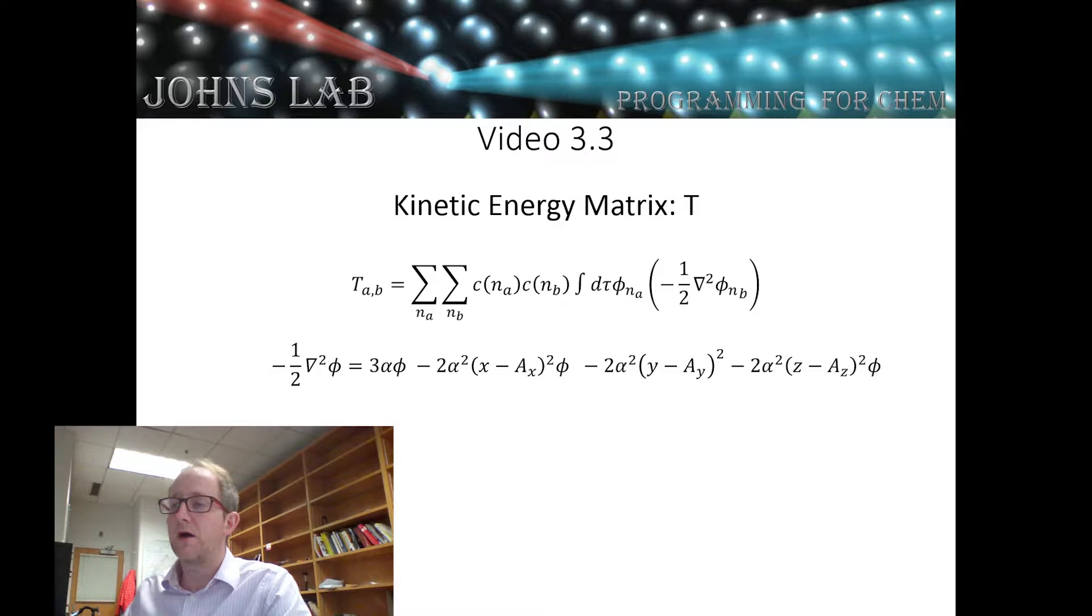We'll get a number times the exponent times the original Gaussian, and then minus polynomials in the x, y, and z direction which will be second order. So x minus ax quantity squared, y minus ay quantity squared, z minus az quantity squared, where ax, ay, and az are the location of the atom that this basis function is centered on.